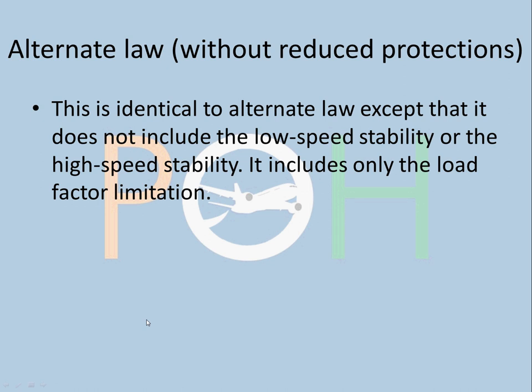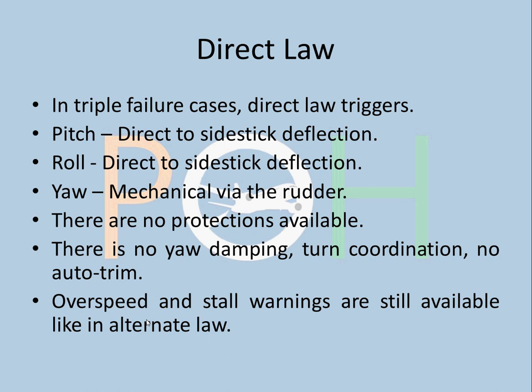Alternate law without reduced protection is identical to alternate law except it does not include low speed stability or high speed stability — it includes only load factor limitation. There are different conditions that lead into alternate law with and without reduced protection. In triple failure cases, direct law triggers. Normal law can handle single failures, alternate can handle dual failures, and direct law handles triple failures.